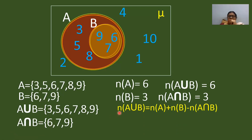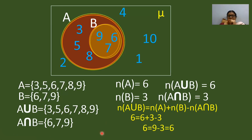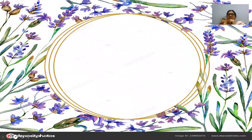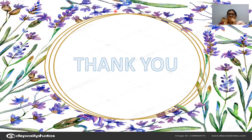Now we will prove: N of A union B equals N of A plus N of B minus N of A intersection B. This is also a 4-mark question for the final examination. Substituting: N of A union B is 6, N of A is 6, N of B is 3, N of A intersection B is 3. So 6 plus 3 equals 9, minus 3 gives 6. LHS equals RHS. This is all about today's session — thank you students, keep watching and subscribe.